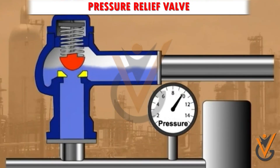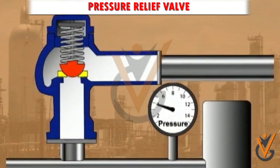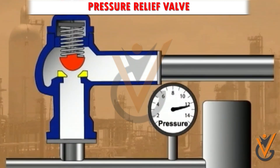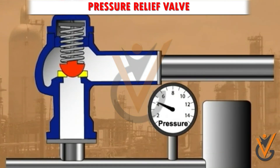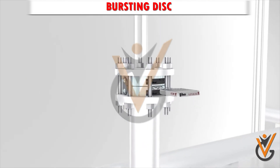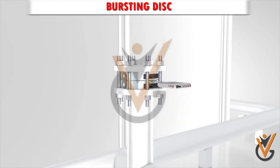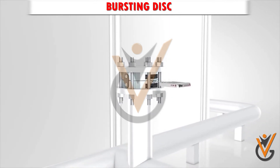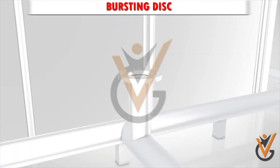Pressure relief valve: excess pressure is released by opening the valve. It opens at 10% over working pressure; valve lift is proportional to excess pressure buildup. The valve setting pressure can be altered by adjusting spring tension. Bursting disc: pressure is released by bursting the disc, which is permanently damaged when it bursts. It bursts at the set pressure, and the setting pressure cannot be altered in place.